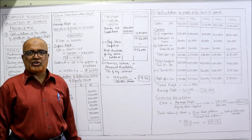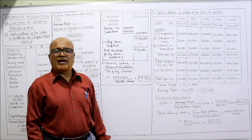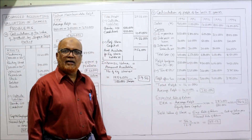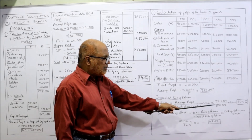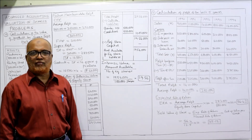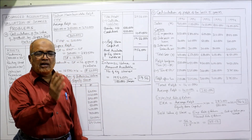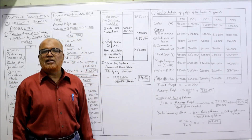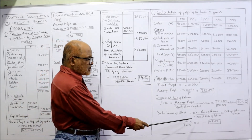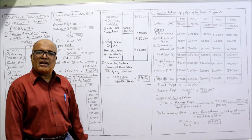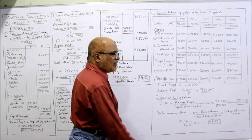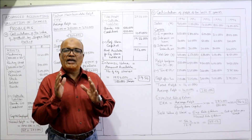Expected rate of return (ERR) = average profit ÷ equity share capital. Equity share capital given in the problem = 5 lakh. ERR = 2,82,000 ÷ 5,00,000 = 56.4%. Now apply the yield basis formula: yield value of share = (ERR ÷ NRR) × paid-up value per share. ERR = 56.4%, NRR = 12.5% (given), paid-up value per share = ₹10. Yield value = (56.4 ÷ 12.5) × 10 = ₹45.12 per share.